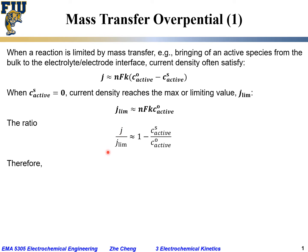Given this relationship between the ratio of current densities, we can rearrange to get the concentration ratio: Cs/C₀ = 1 - j/j_lim. This gives us a relatively easy way to estimate the surface species concentration if we know both the limiting current density and the actual current density.